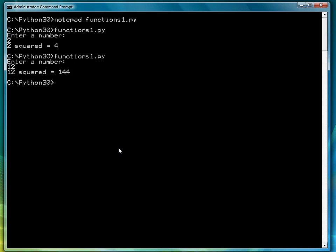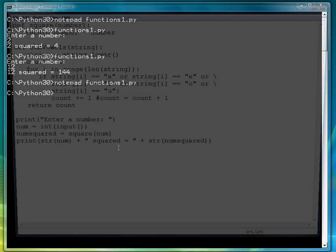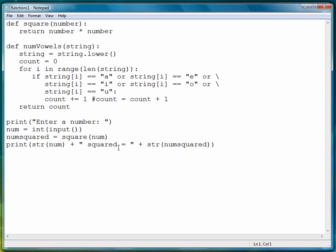This time let's do 12. 12 squared equals 144. So that's how the function call works.